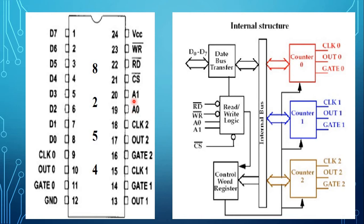When A1 and A0 are both 0, counter 0 is selected. When A1=0 and A0=1, counter 1 is selected. When A1=1 and A0=0, counter 2 is selected. When A1 and A0 are both 1, the control word register is selected.